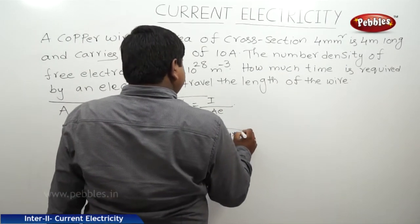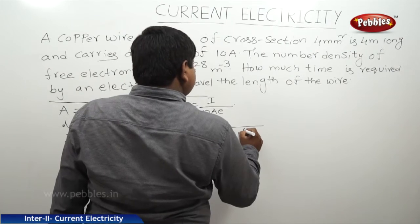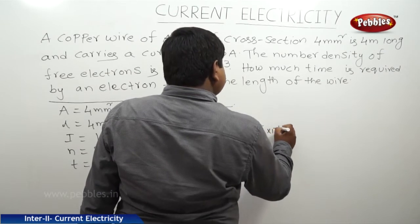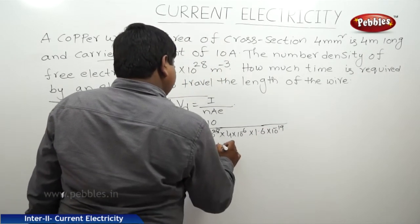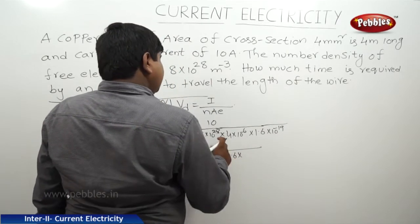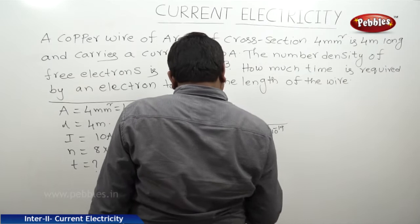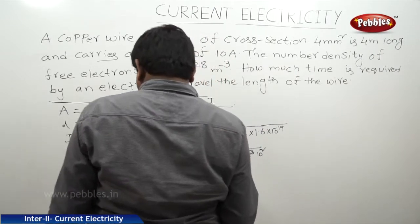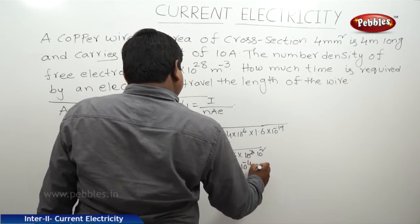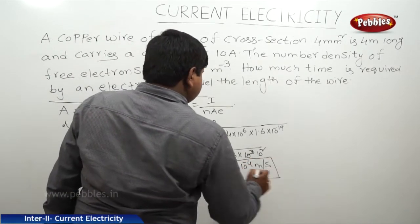Continuing the substitution: A is 4 into 10 to the power of minus 6, and e is 1.6 into 10 to the power of minus 19. Computing the denominator gives 10 to the power of 3 divided by 10 squared. We get Vd equal to 1.95 into 10 to the power of minus 4 meters per second, which is the drift velocity acquired by the electrons through the cross-section.